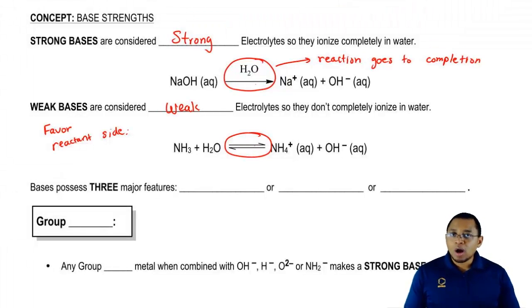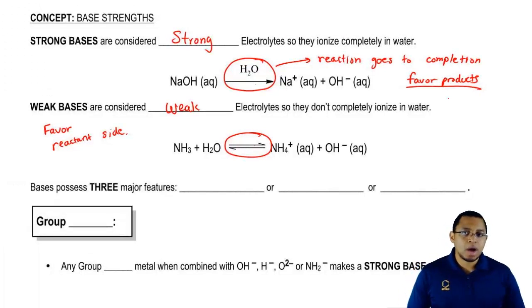In the opposite way, strong acids and strong bases, we're going to say they favor the products, which means nearly all of our reactants breaks down to give us products.